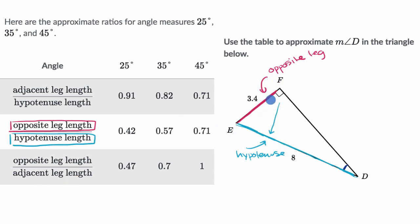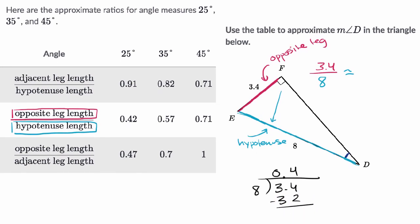In this case, our opposite leg length over hypotenuse length is 3.4 over 8. Let me calculate this: 8 goes into 3.4... 8 doesn't go into 3, but goes into 34 four times. 4 times 8 is 32. Subtracting gives 2. Bring down a zero—8 goes into 20 two times. So we get 0.42, which is about as much precision as the table has.